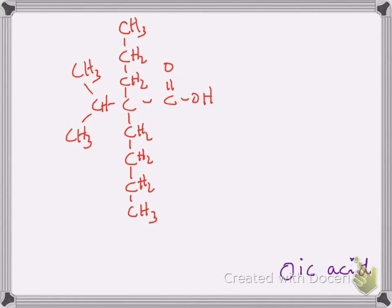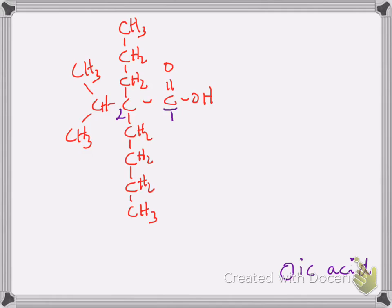The next thing is to find the longest continuous carbon chain that contains the carboxyl carbon. I see the longest continuous chain goes right down the middle of the molecule — one, two, three, four, five, six, seven, eight. But I can't number it that way because I didn't include the carboxylic carbon, which is required when naming carboxylic acids. We must include the carboxylic carbon, and it always gets the lowest number possible, so it gets carbon number one, and the next carbon is number two.